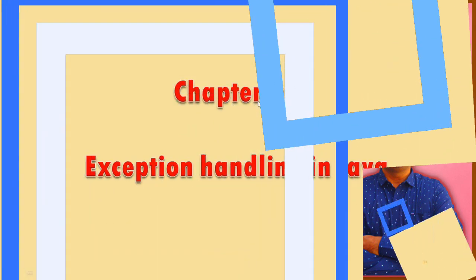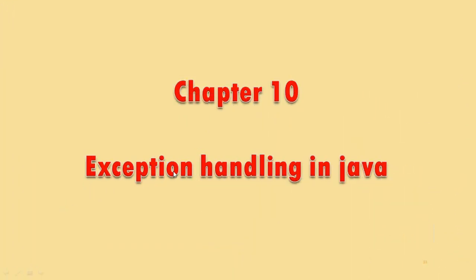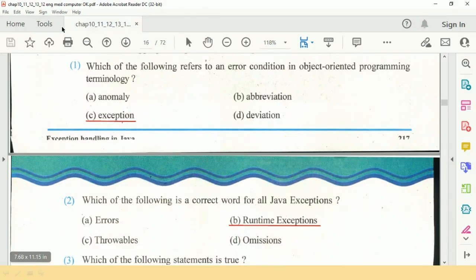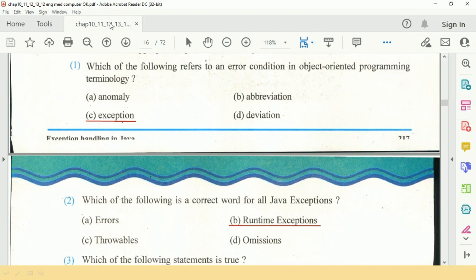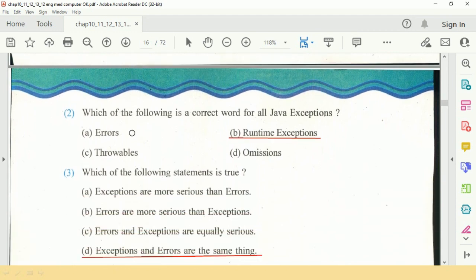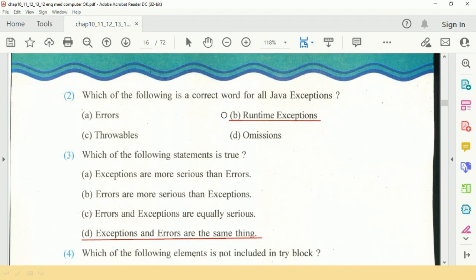Exception handling in Java. Question one: which of the following refers to an error condition in object-oriented programming terminology? Answer: C, exception. Question two: which of the following is correct word for all Java exceptions? Answer: B, runtime exceptions.